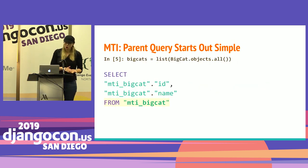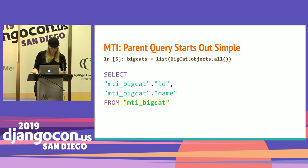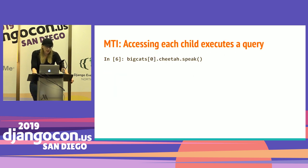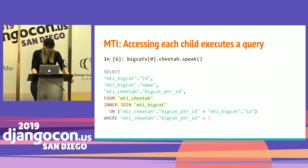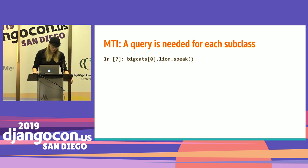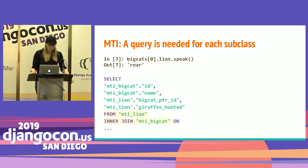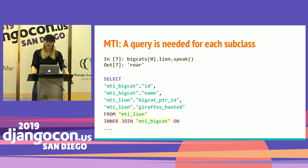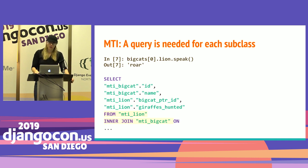The problem starts when we try to get all species of cats regardless of lion, cheetah, or whatever. We query the big cat table, then I want to access the speak method on the child. But I don't know if this is a cheetah or a lion because that foreign key is on the cheetah and lion tables. So we run a query on the cheetah table — it's not a cheetah, so we get an exception. Then we try again with lion, it works and returns 'roar', but we've executed another query. For each record you have, you'll execute up to N queries where N is the number of subclasses.